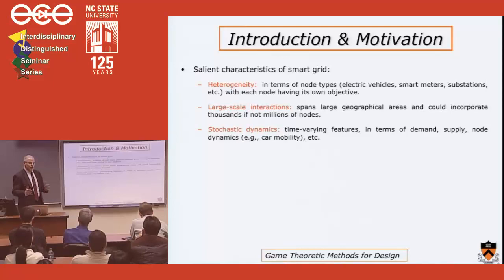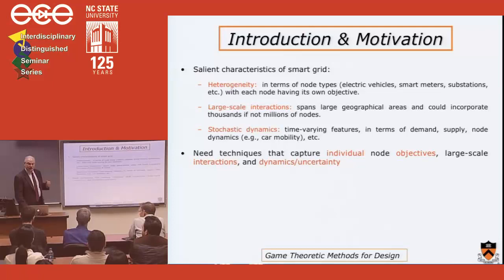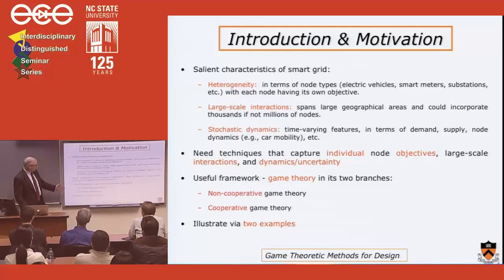One reason is that it's a heterogeneous network — there are many different kinds of nodes, there are loads, there are generating sources, and they all have their own individual objectives. So it's like an economic system. Everybody has their own objective and they're all working together. They interact on a large scale, and it's stochastic — it changes over time randomly. Game theory has been very helpful in understanding economic systems, and smart grid is a lot like that. There are two branches: non-cooperative and cooperative game theory, and I'll illustrate how both can be applied.